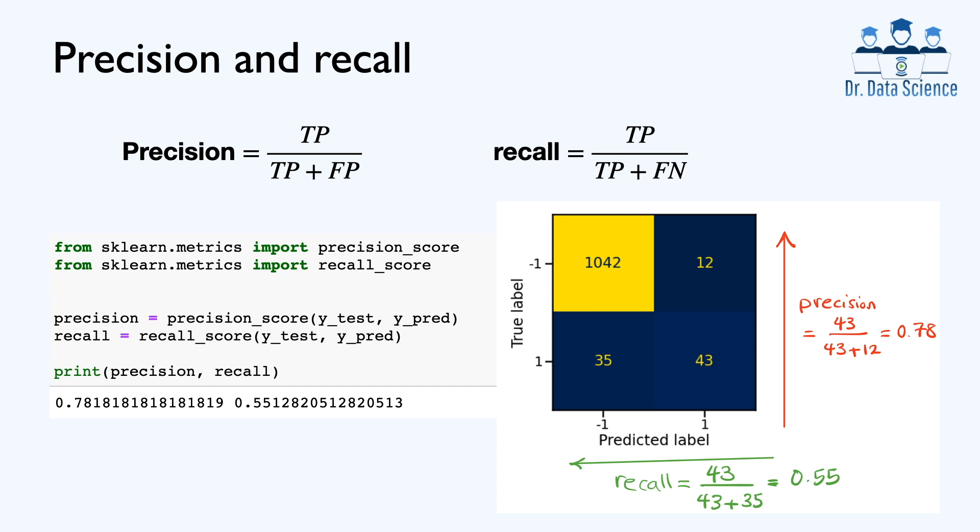And similarly, we can find recall. Recall, if you remember, is defined as true positive, which is 43, again, over 43 plus 35, which gives us 0.55. And we can see that the recall here is really unacceptable because it's very close to 50%.